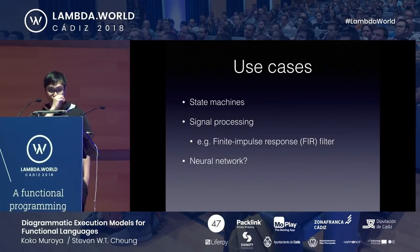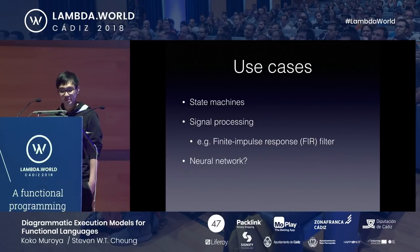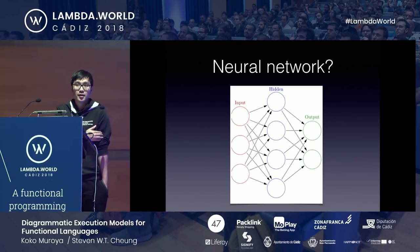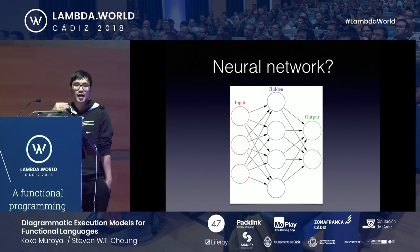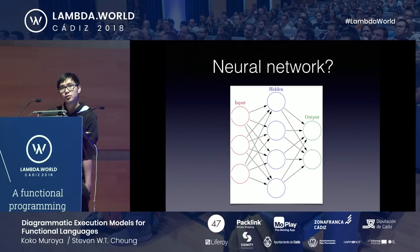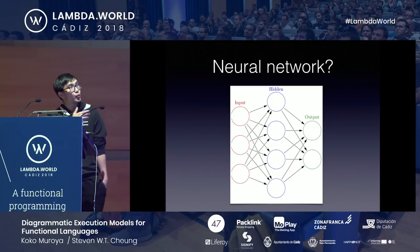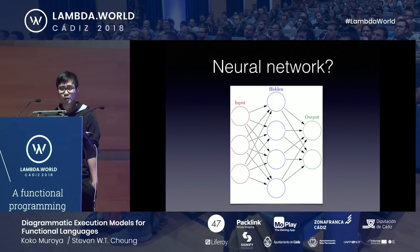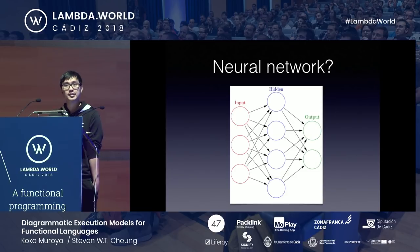Another potential use case — still a work in progress — is neural networks. You can think of each perceptron or neuron as a cell, and the feed-forward process pushes data layer by layer to increase throughput. Circular dependencies mean recurrent neural networks (RNNs) can also be modeled. The open question is how to do differentiation or gradient calculation.